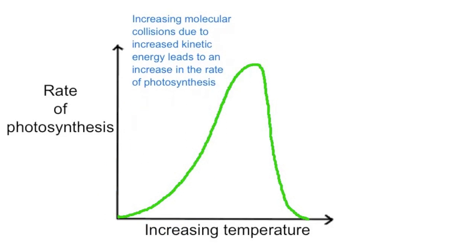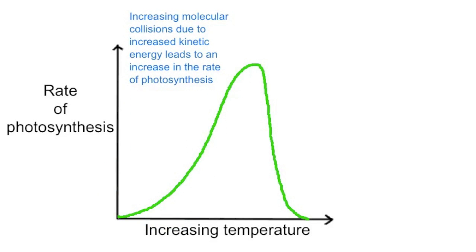This is because initially increasing temperature increases the kinetic energy available to molecules and therefore increases the molecular collisions. This happens up until a point which we refer to as being the optimal temperature where you have the maximum rate of photosynthesis.